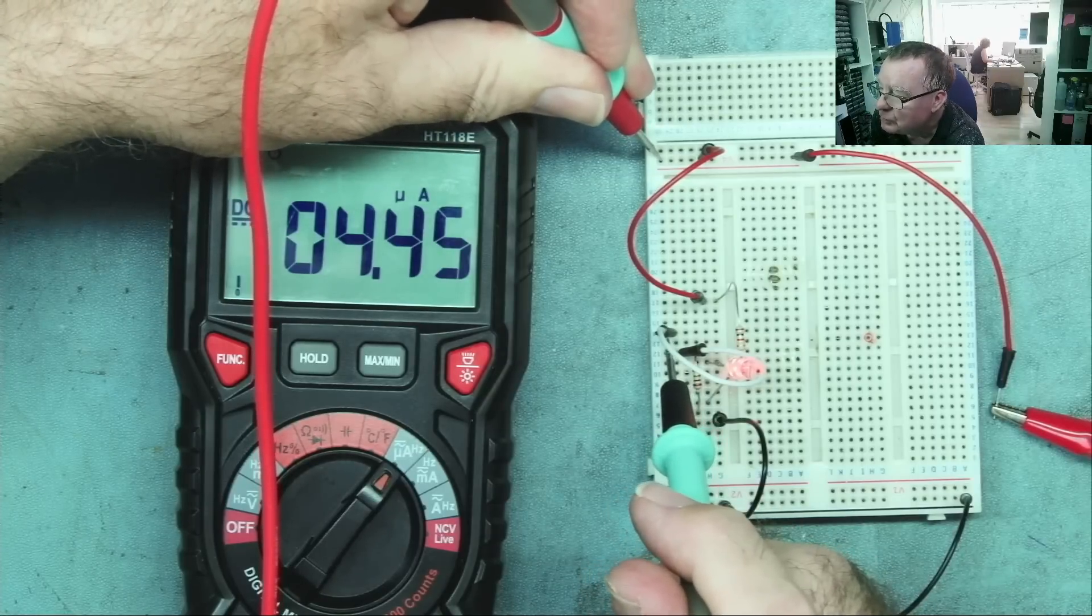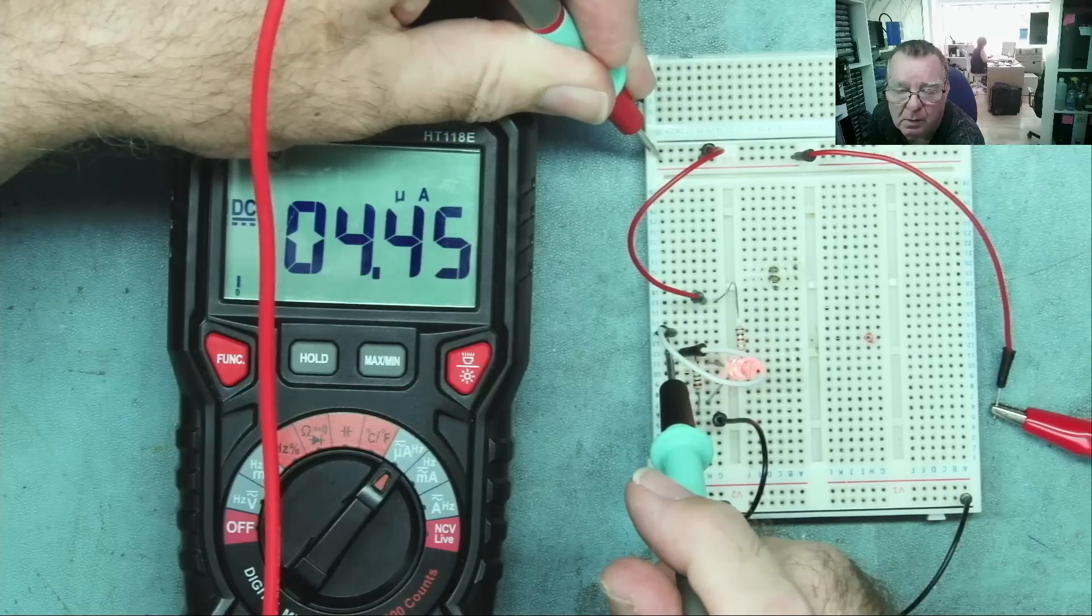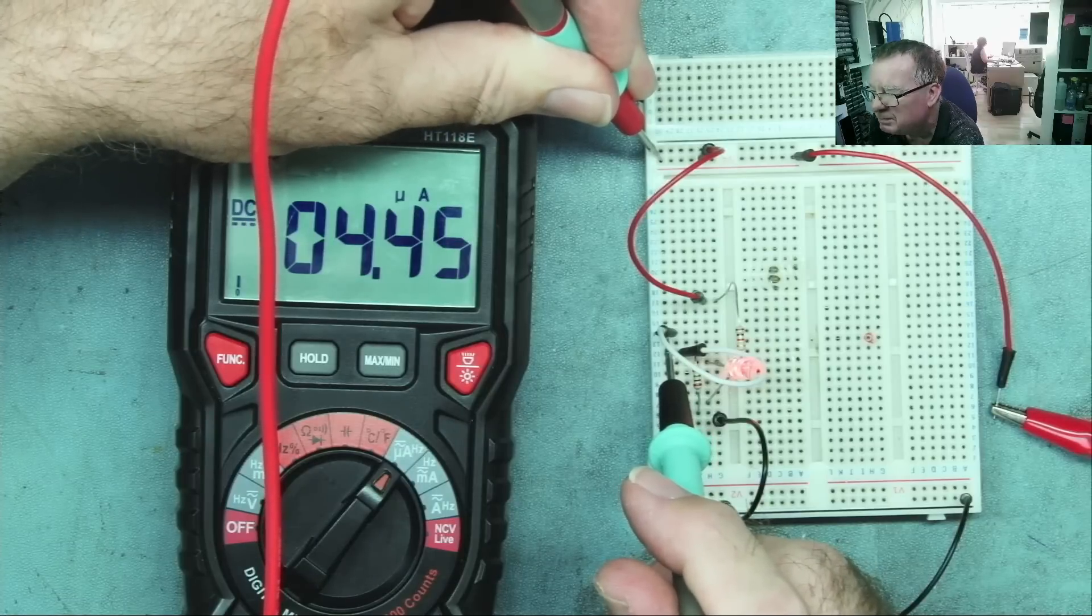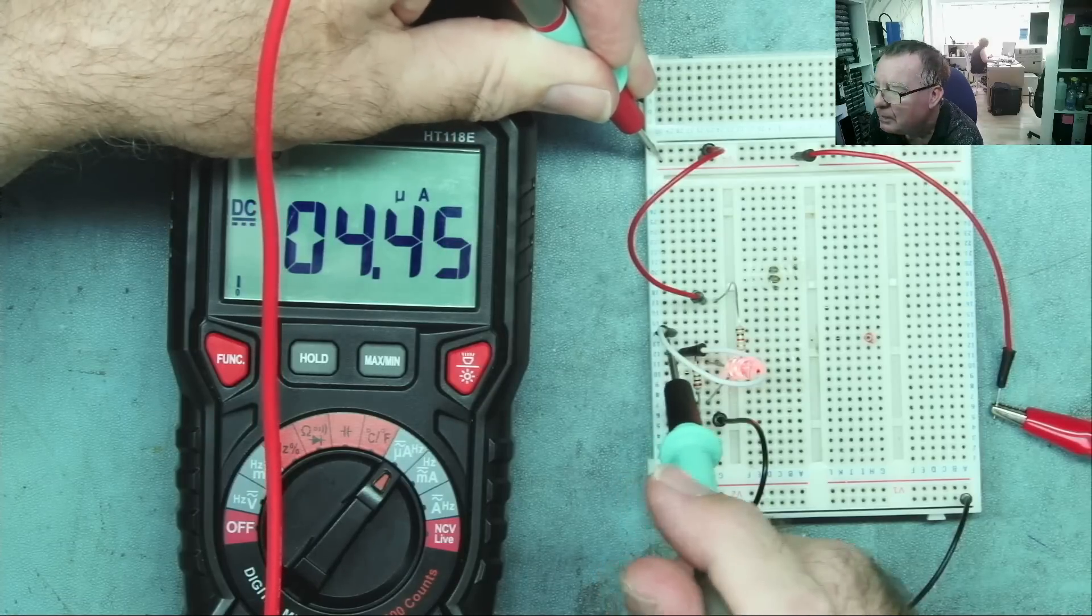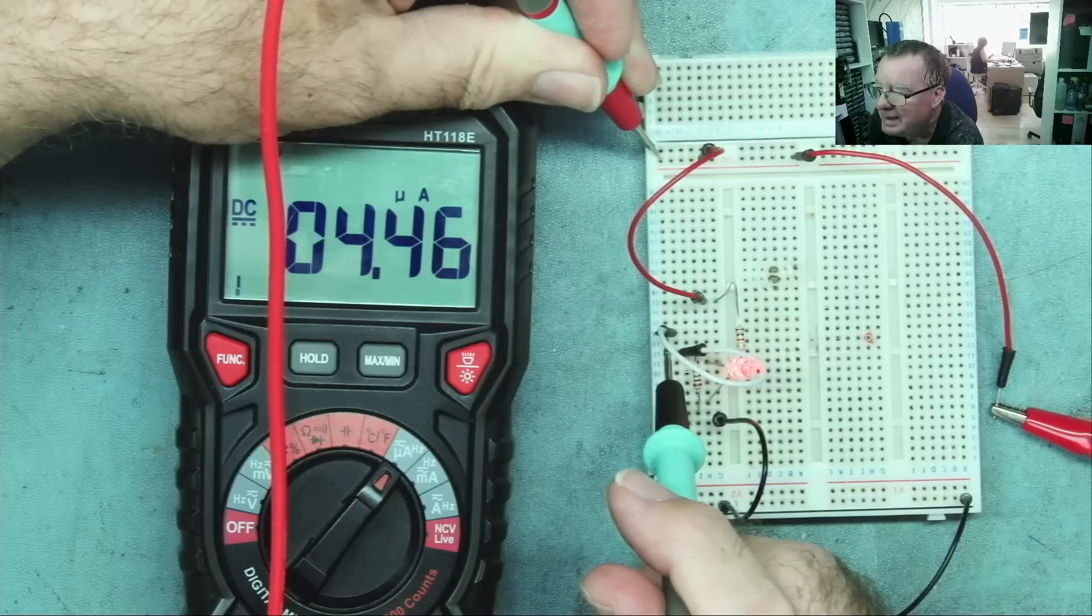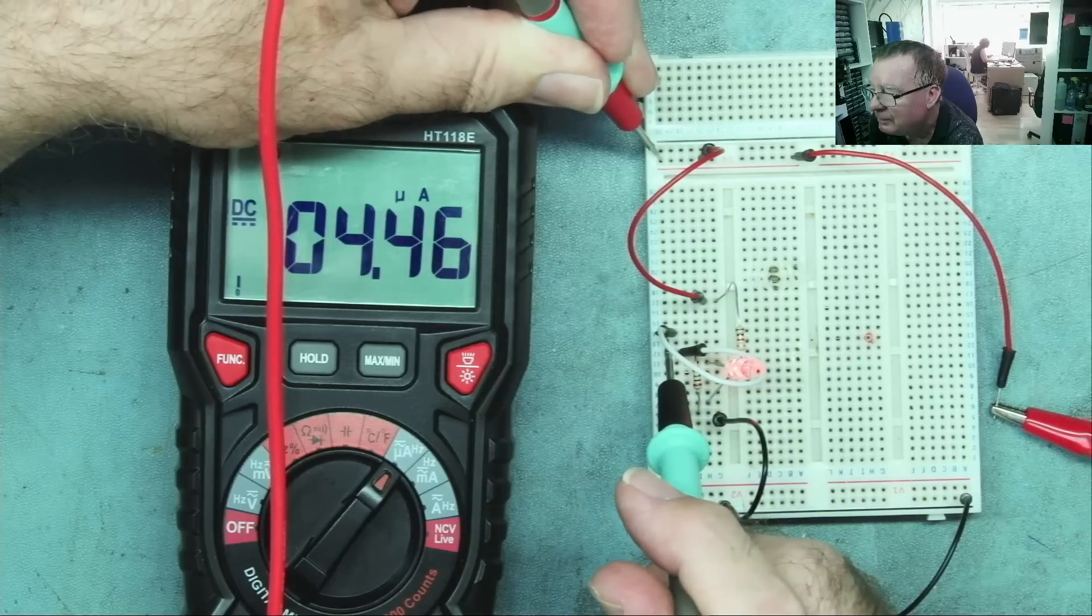So you can see the actual gate current is not zero. With a MOSFET, it is pretty close to zero. With the JFET, it is a little bit higher. But it's still very low.